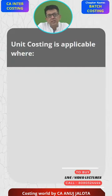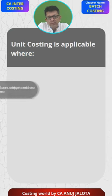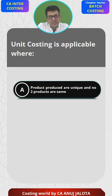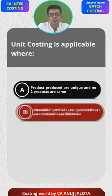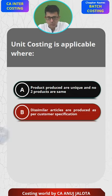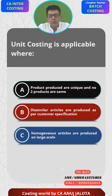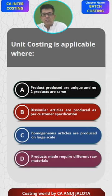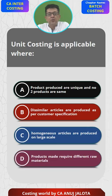Unit costing is applicable where? A: products produced are unique and no two products are same. B: dissimilar articles are produced as per customer specifications. C: homogeneous articles are produced on a large scale. D: products made require different raw materials.